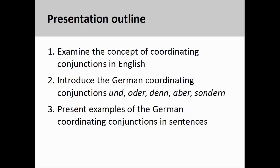The presentation will first examine the use of coordinating conjunctions in English, focusing on how coordinating conjunctions are used to create compound structures and to join sentences together. Then the video will move over to an examination of the German coordinating conjunctions und, oder, denn, aber, and sondern, before concluding with examples of how these conjunctions are used in sentences. Let's get started.